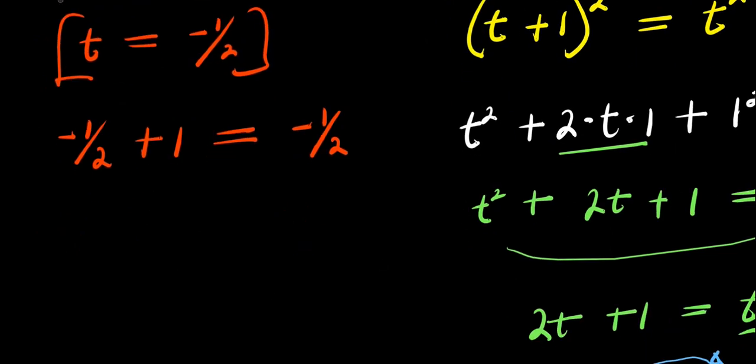So from here on, this 1 here can be divided by 1 so we can have negative 1 over 2 plus 1 divided by 1 equals negative 1 over 2.